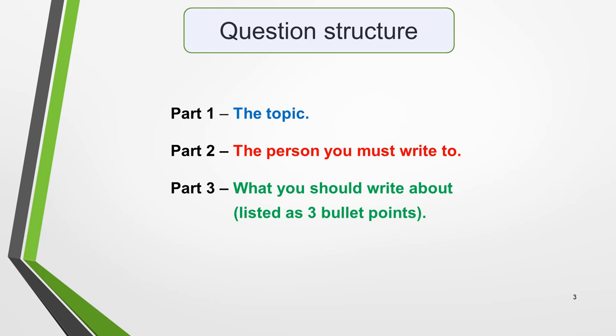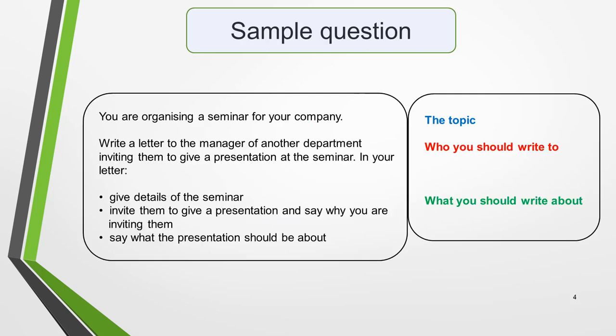First, the structure of the question. All questions for IELTS letters have the same structure. They are made up of three parts. Part one is the topic, part two the person you must write to, and part three what you should write about, listed as three bullet points. Here's a sample question with the three parts illustrated.